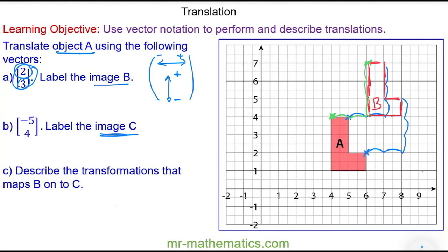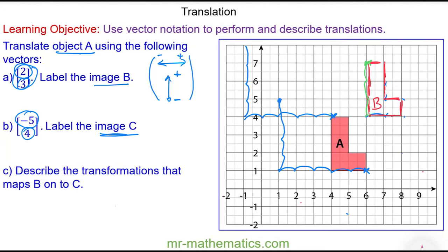Now let's create image C. I'm going to pick a vertex and translate it 5 to the left, because this is a negative 5 — so 1, 2, 3, 4, 5 — and 4 units up, because this is a positive 4 — 1, 2, 3, 4. I'll do the same translation from a different vertex: 5 to the left and 4 units up.